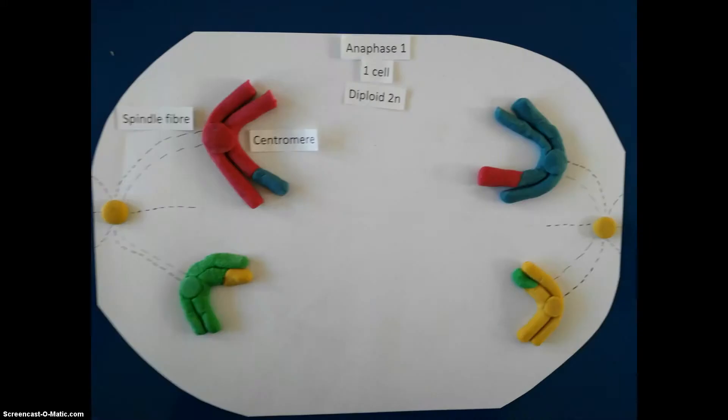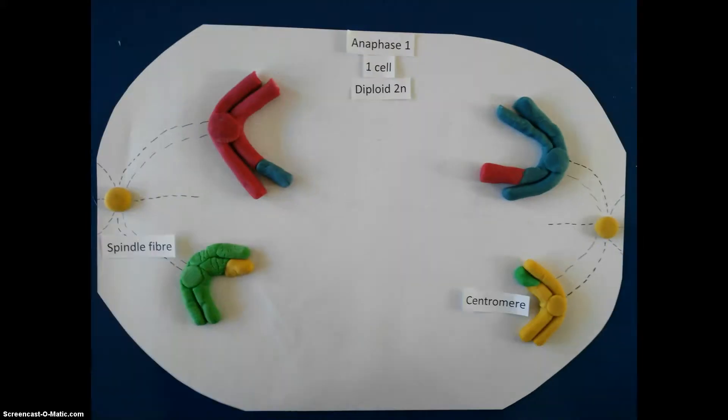In anaphase 1, the spindle fibers shorten and pull each of the chromosomes of the bivalent pair toward opposite poles of the cell.